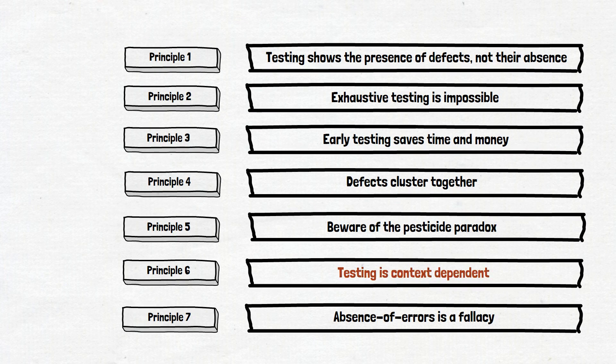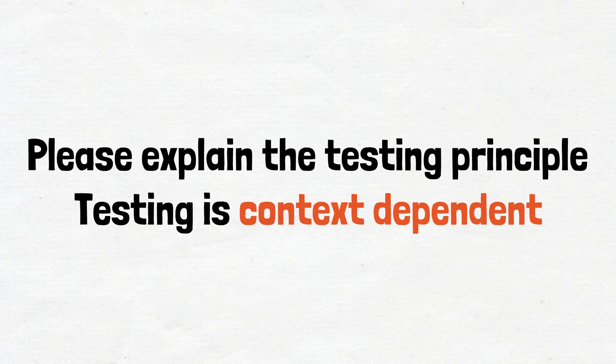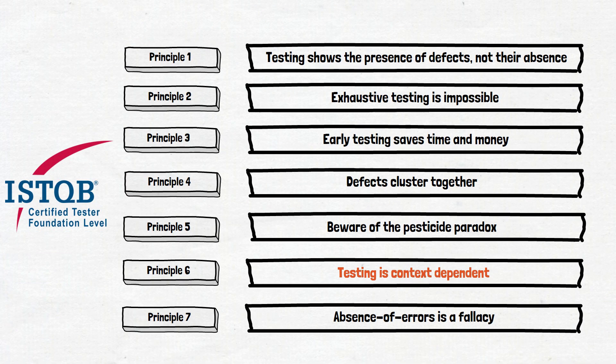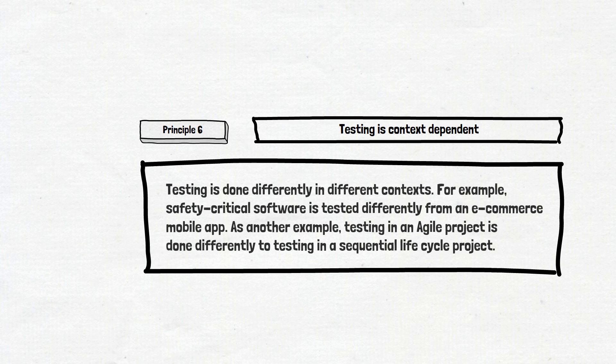Testing is context-dependent is the sixth principle defined in ISTQB. And as with most of the principles, it sounds simple. But in fact, it is common to be ignored by testers. Let's learn the consequences of ignoring it, and we'll start with the ISTQB explanation.